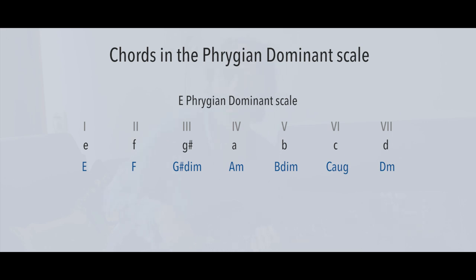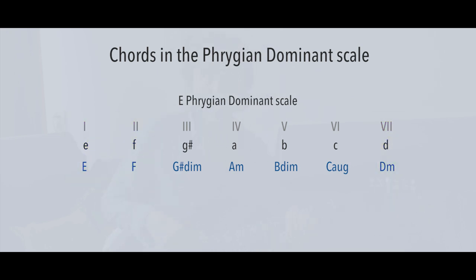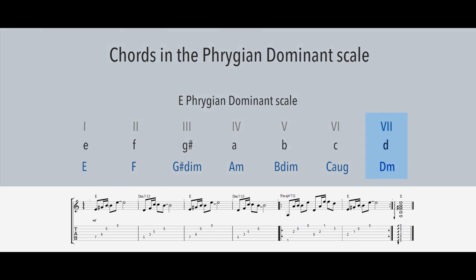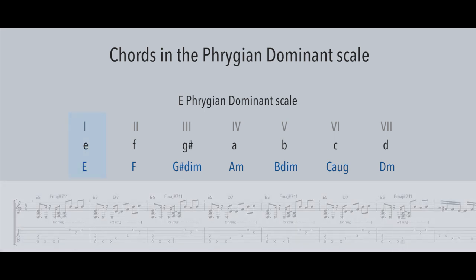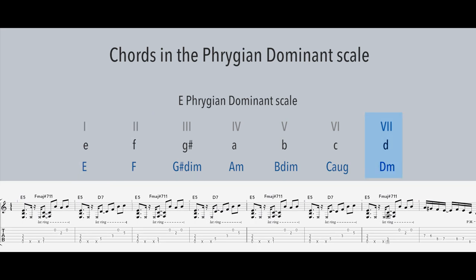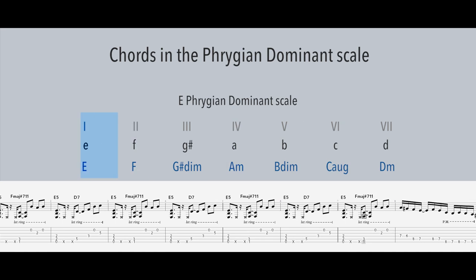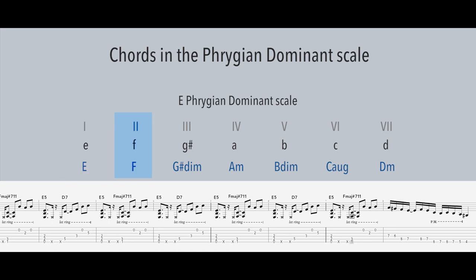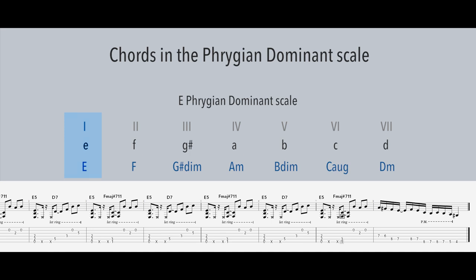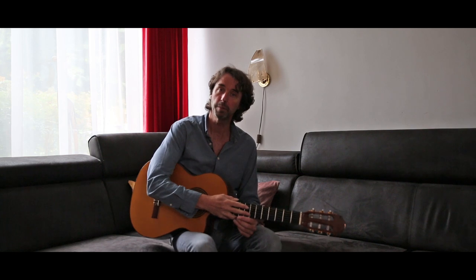The two most common chords used in a Phrygian dominant setting are the major chords on the 1st and 2nd degree, and sometimes the 7th degree is added for a bit of variation — like in this acoustic example, and like in this rock/metal example.